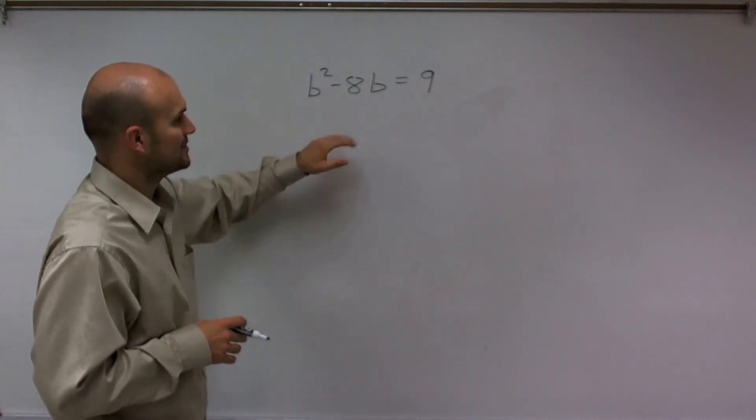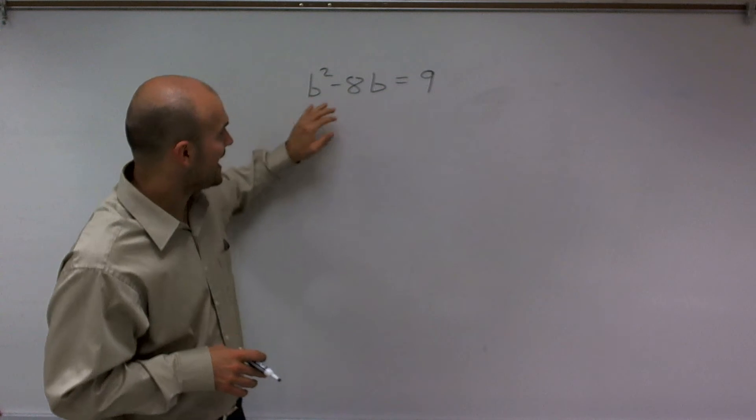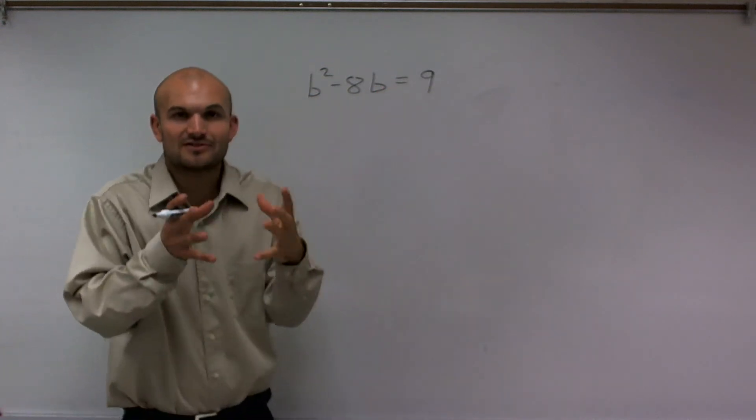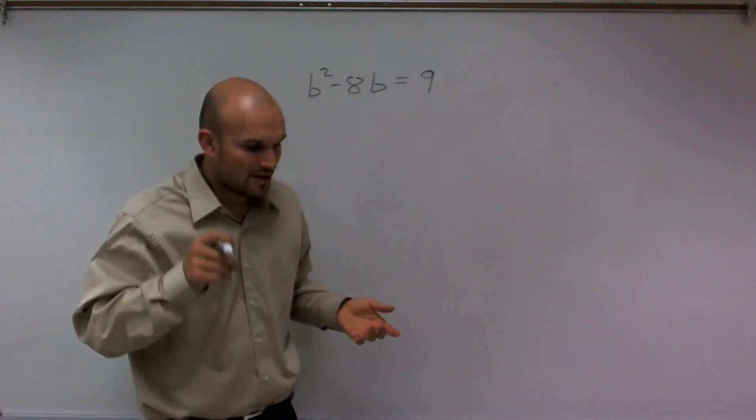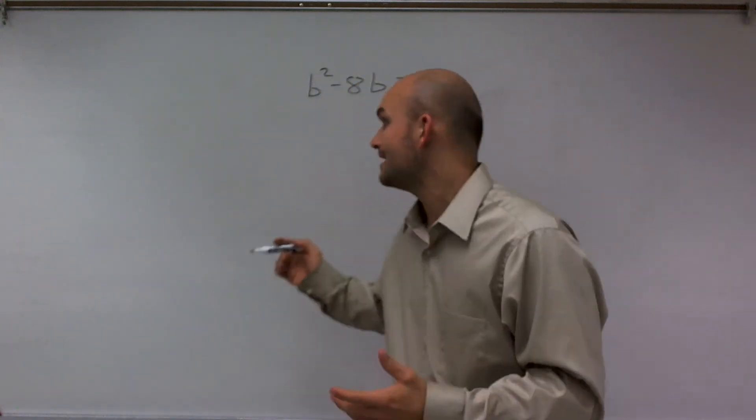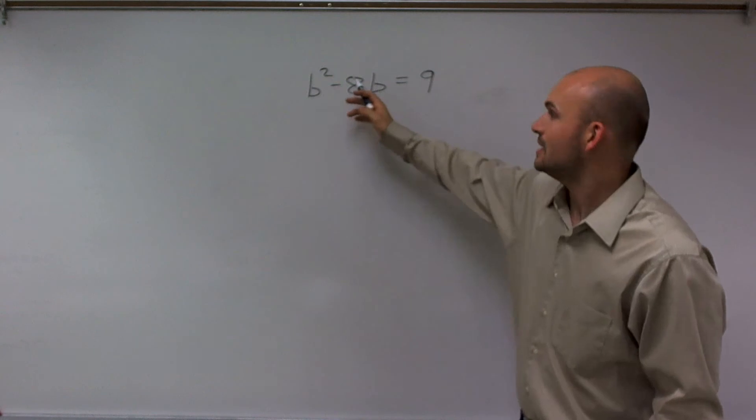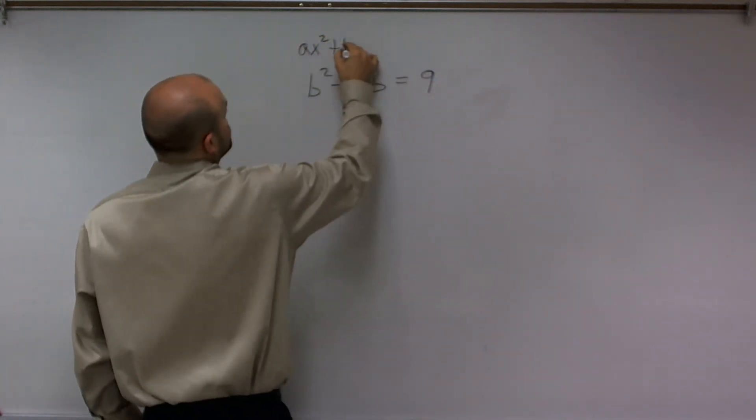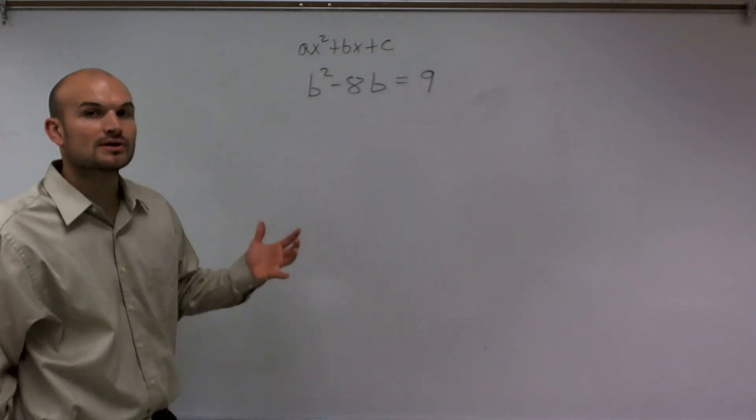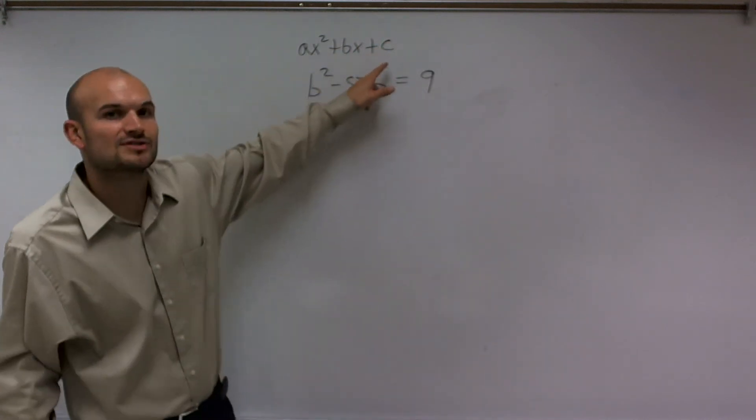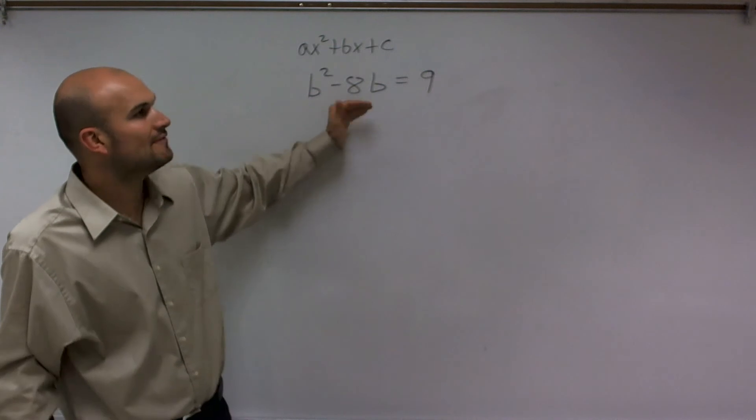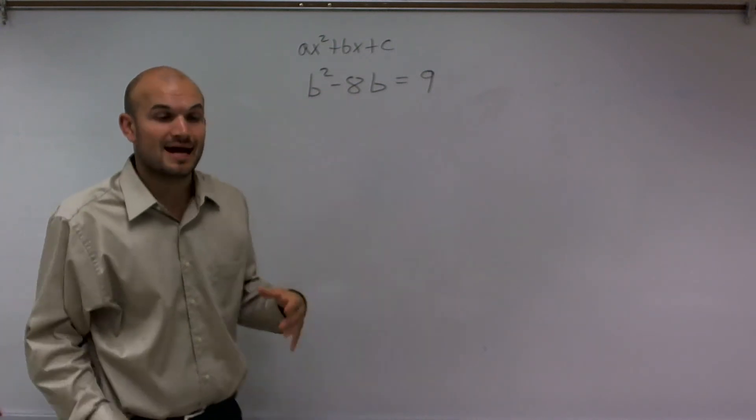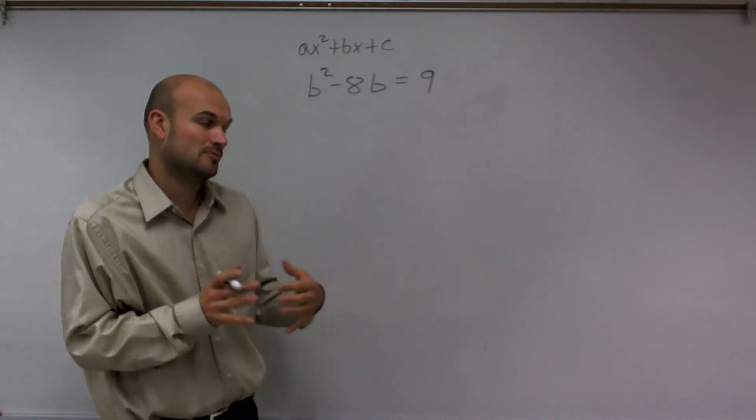The next thing I need to do is somehow get rid of my b squared. I need to get these down to 1b that I can solve for. If you think about a quadratic, I have ax squared plus bx plus c. What we're going to do is create a special c that's going to give us a perfect square trinomial. You'll see what I'm talking about when I talk about a perfect square trinomial.